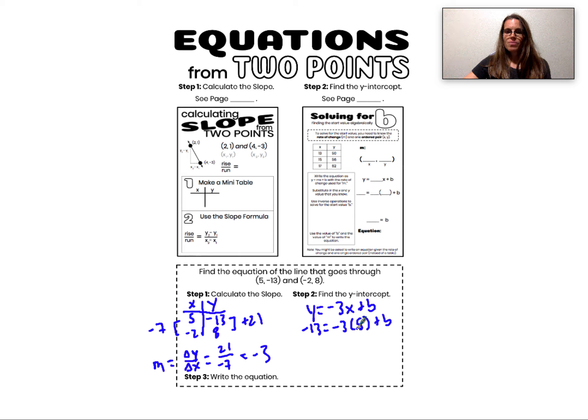I'm plugging in one ordered pair that I know so that the only thing I don't know is b and I can solve for that start value algebraically. -13 equals -3 times 5. -15 plus b. To find b, all I need to do is add 15 to both sides and then I get -13 plus 15 is 2. My start value is 2.